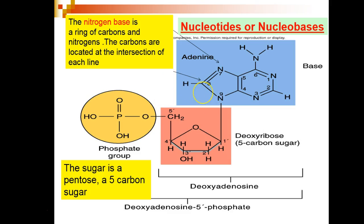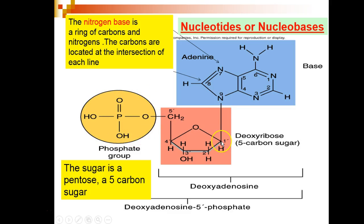In carbon number five of the sugar, a phosphate group is attached. To carbon number one of the sugar, a nitrogenous base is attached. A nitrogenous base consists of a ring of carbons and nitrogens.